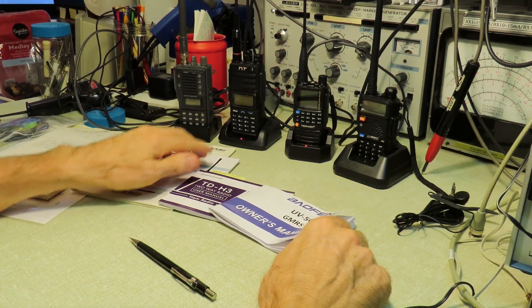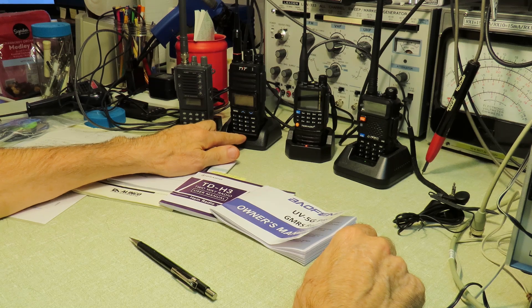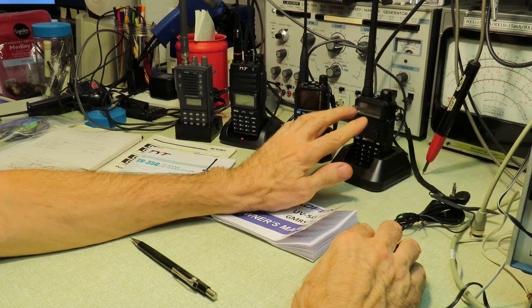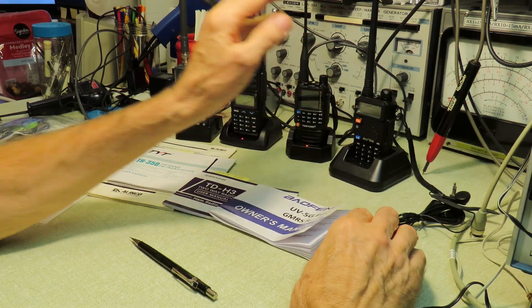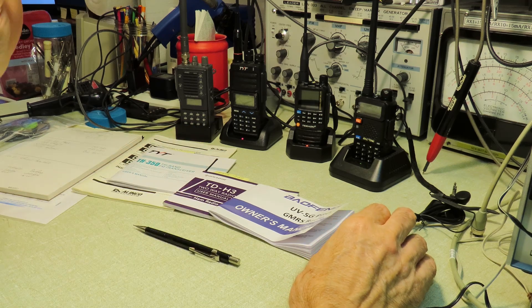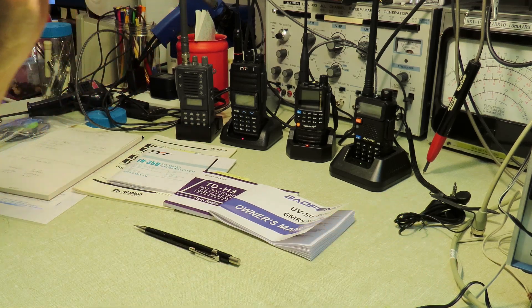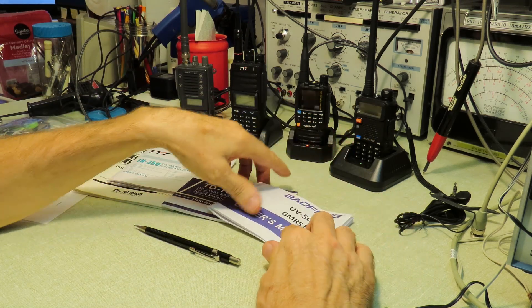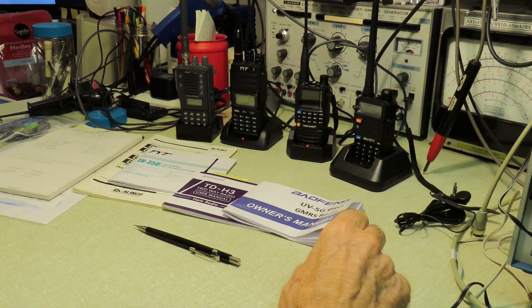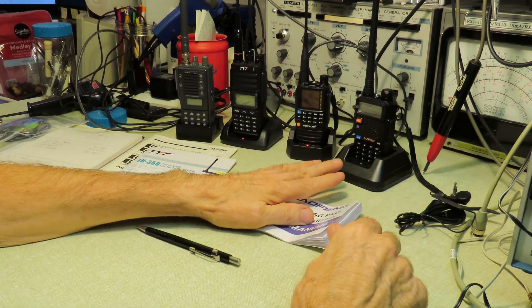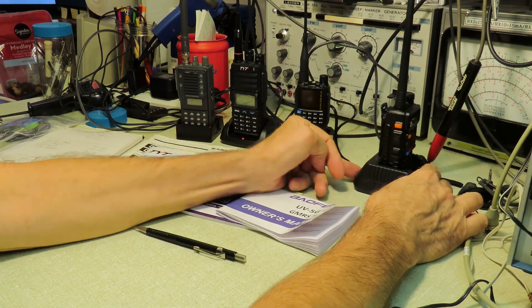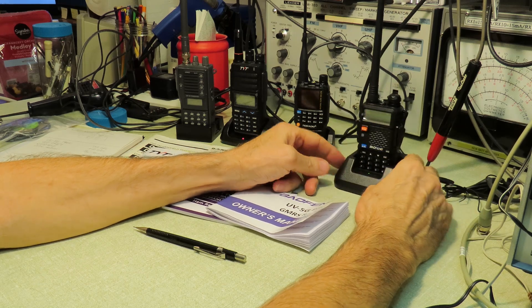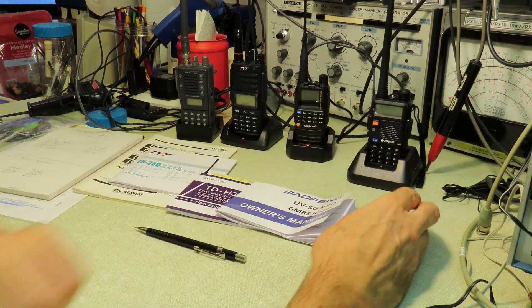Some of the advantages, the TYT came with a programming cable. The Baofeng does not come with a programming cable. It does come preloaded with all of the GMRS frequencies in there. If you need to change PL tones or repeater offsets, you can do that from the keypad. The instructions are here in the manual. But it does not come with a programming cable. And there's no provision to charge this radio unless you buy another charger, an aftermarket charger. There's no way to charge this from 12 volts.